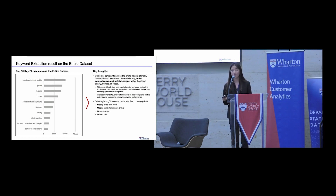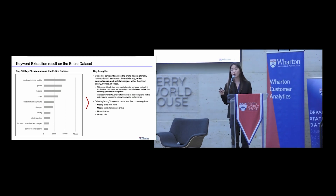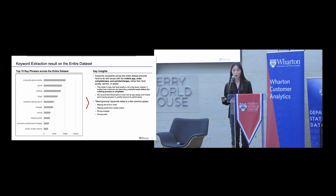We ran BERT on the entire dataset and received the following top ten key phrases, including: McDonald's, mobile, points, missing, forgot, and others. This leads to our first key insight: the bulk of these complaints is mostly centered on the mobile app, order completeness, and points and charges — rather than things like food quality, service, or speed.